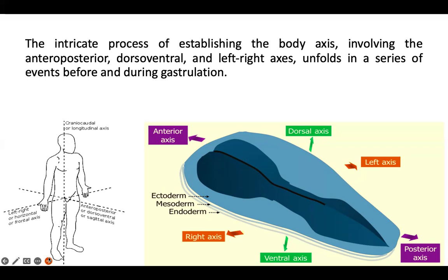What is the gastrulation process? The gastrulation process is usually seen in the third week of human development, in which the embryo is converted from a simple disc into a multi-layered, multi-dimensional structure. There are multiple layers and multiple dimensions of embryo development — this entire process is the gastrulation process.